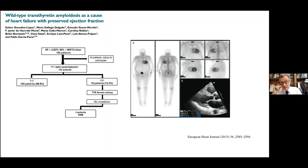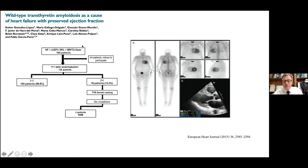One term I really dislike is heart failure with preserved ejection fraction — patients who present with signs and symptoms of heart failure but have a normal ejection fraction. This can occur in hypertension, obesity, and other conditions. But in a study from Spain, researchers took patients with so-called HFpEF, performed DPD scanning, and found that 13% had cardiac amyloidosis — which, if translated into the general population, would represent an enormous number of people.